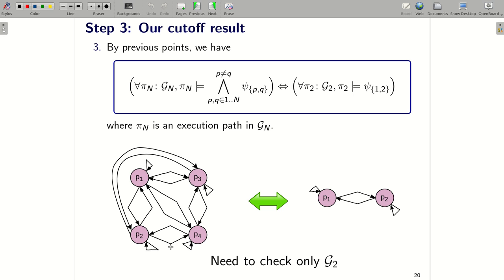So by previous points, we have our cutoff result. This formula is complicated, but it has a beautiful meaning. This formula means that instead of checking all instances with N processes, now we need to focus on only an instance with two processes, G2. For example here you can see that we don't need to check an instance with four processes. We need to focus only on an instance with two processes here, G2.